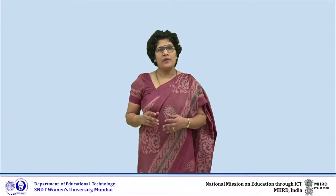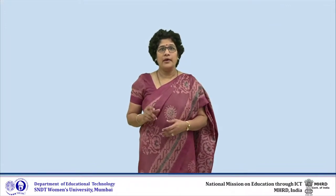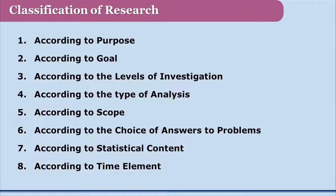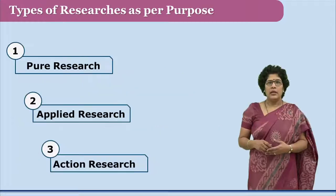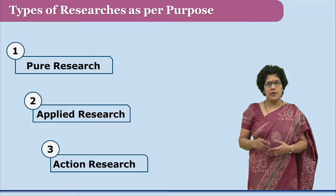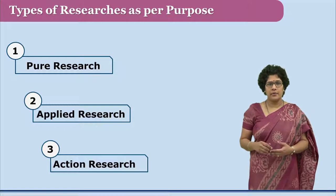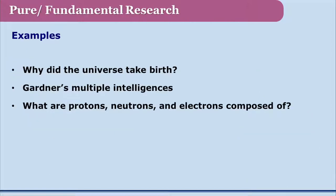Research is formed from the two words 're' and 'search', meaning once again searching the phenomena and social happenings around. Depending on the purpose and point of view from which researches are conducted, there are many types of classification. Today we will be seeing the classification based on the purpose of research. There are three main types: pure, applied, and action researches.